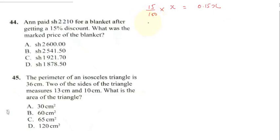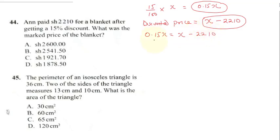If Ann bought the blanket for 2210 shillings, that means discounted price, the amount that was removed, is also equal to x which is the marked price minus 2210. So if this is the discounted price and this minus this is also equal to the discounted price, what we'll do here is 0.15x equals x minus 2210.